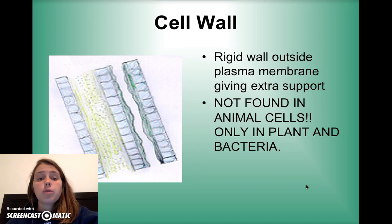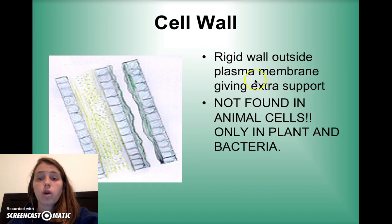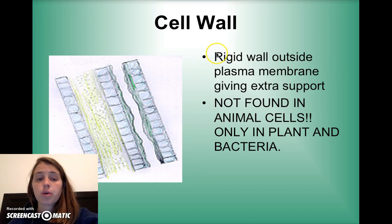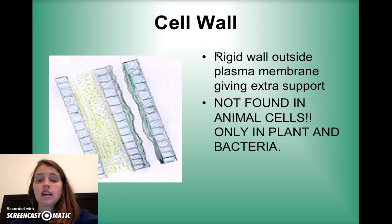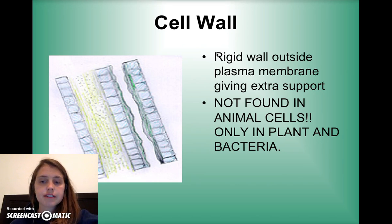There is the cell wall. Cell walls only happen in plant cells and some bacteria. This is a rigid wall made of protein that gives extra support to the cells. They are really not found in any other eukaryotic cells other than plant cells.